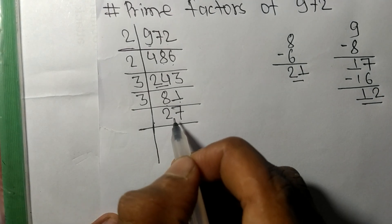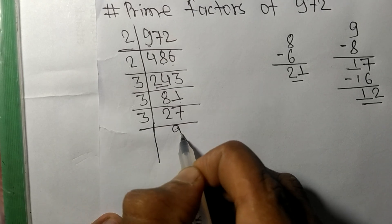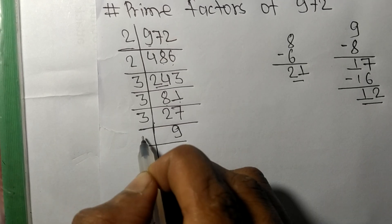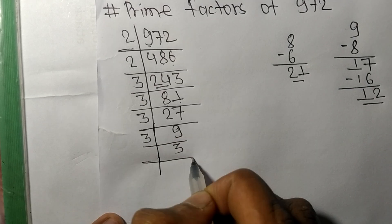3 times 9 means 27. 9 divided by 3 we get 3, and 3 on dividing with 3 we get 1.